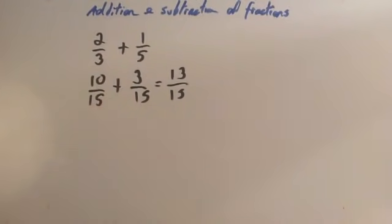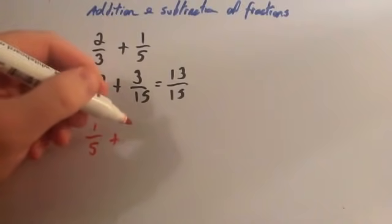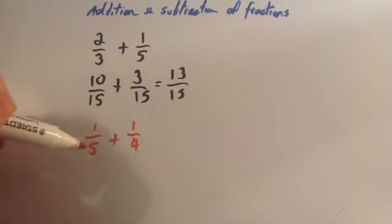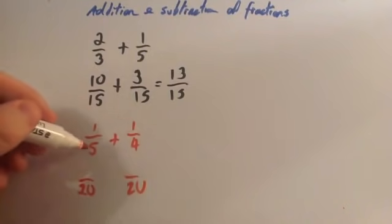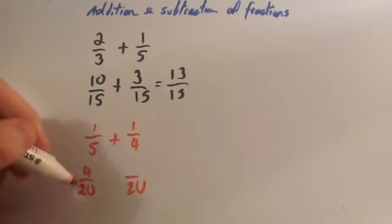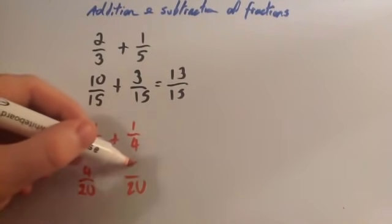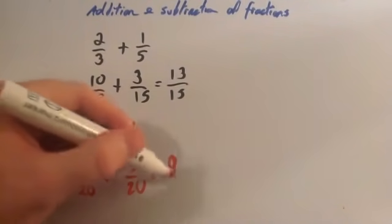Let's look at another example. If I had one-fifth plus a quarter, I would want to have a common denominator. A common denominator would be — let's see what number is a common multiple of five and four. Let's use twenty. To get from five to twenty, you multiply by four, so let's times the one by four and you get four over twenty. To get from four to twenty, you multiply by five, so times the top number by five as well and you get five over twenty. Four-twentieths plus five-twentieths is nine-twentieths.